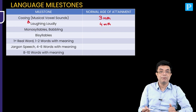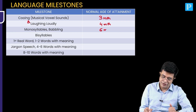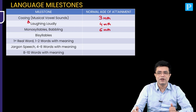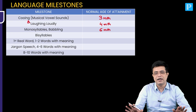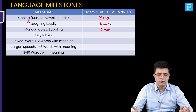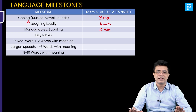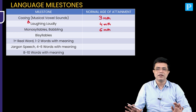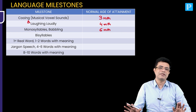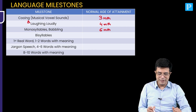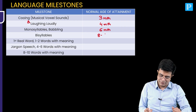Monosyllables and babbling come at 6 months of age. Types of babbling — canonical babbling, canonical bisyllables and all those things — I have discussed in the detailed regular video, so you can look there if time permits. But in this rapid revision, monosyllables come at 6 months and bisyllables come at 8 to 9 months of age.